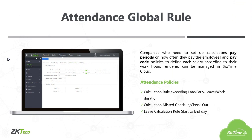Now we will start with the features. The first one is the attendance global rule. Companies who need to set up calculation pay periods, how often they pay employees, and pay code policies to define each salary according to work hours rendered can manage this in Biotime Cloud — everything will be computed for you automatically. Attendance policies include calculation rules for exceeding late, early leave, work duration, or calculation of a missed check-in or check-out, as well as leave calculation rules from start to end day. It's very flexible and very useful for your company.